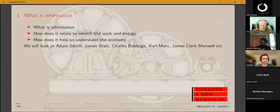How does information relate to wealth and to work, and how does understanding what information is help us understand the economy? And I'll be referencing people like Adam Smith, James Watt the engineer, Charles Babbage the mathematician, Karl Marx, and James Clerk Maxwell the physicist.